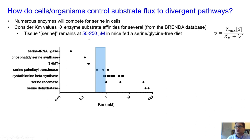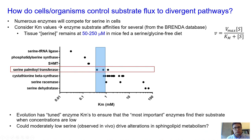Even if we feed mice a serine-glycine-free diet, tissue concentrations remain in the 50 to 250 micromolar range. This means the most important enzymes are always loaded by serine in nearly all cases. We focus on serine palmitoyltransferase (SPT) because it is ubiquitously expressed and sphingolipids are important for neurological function. We hypothesize that SPT has tuned its KM to be sensitive to serine levels.